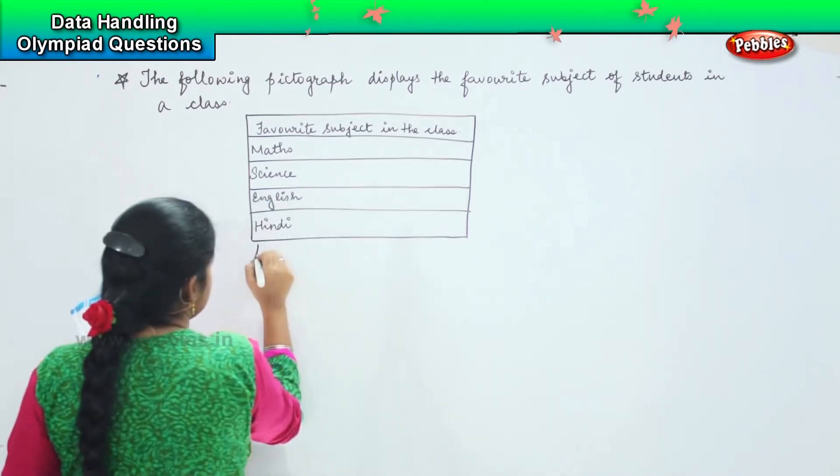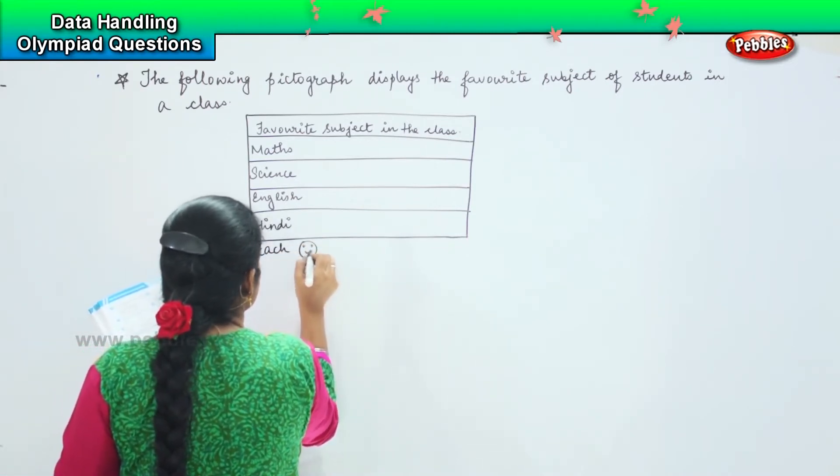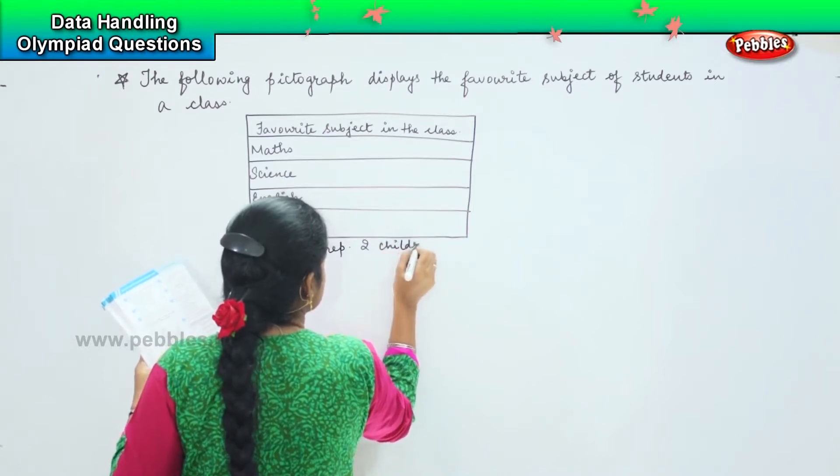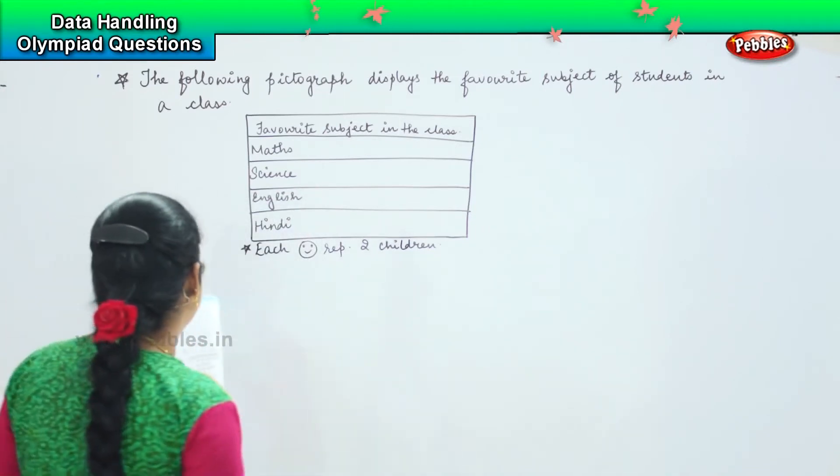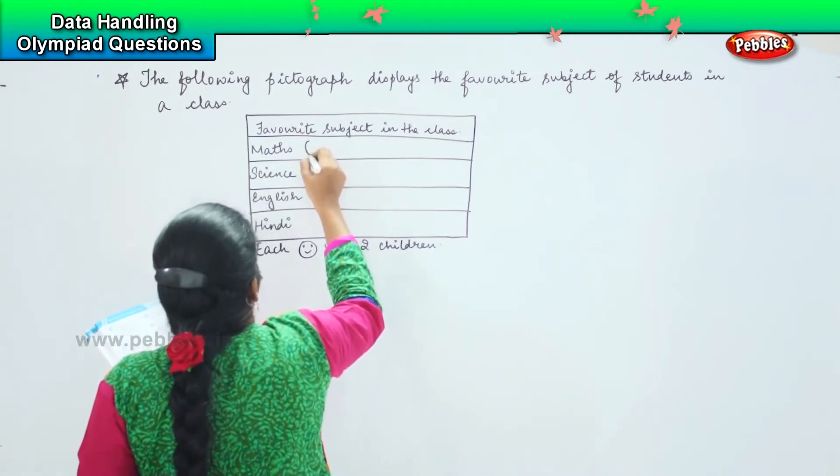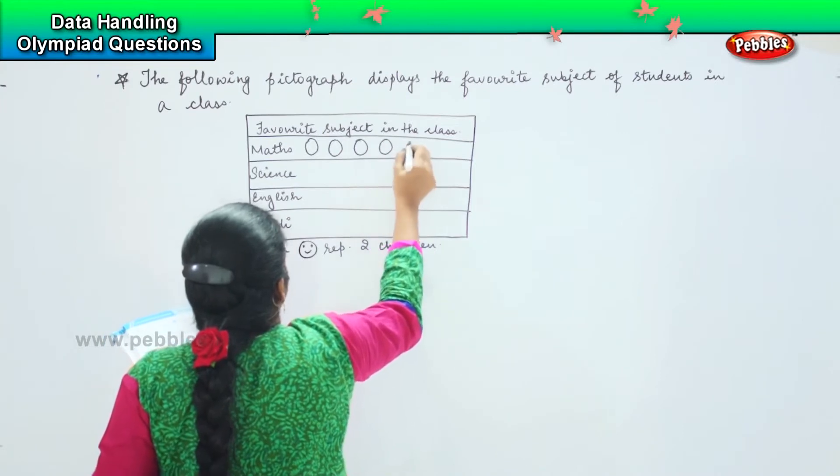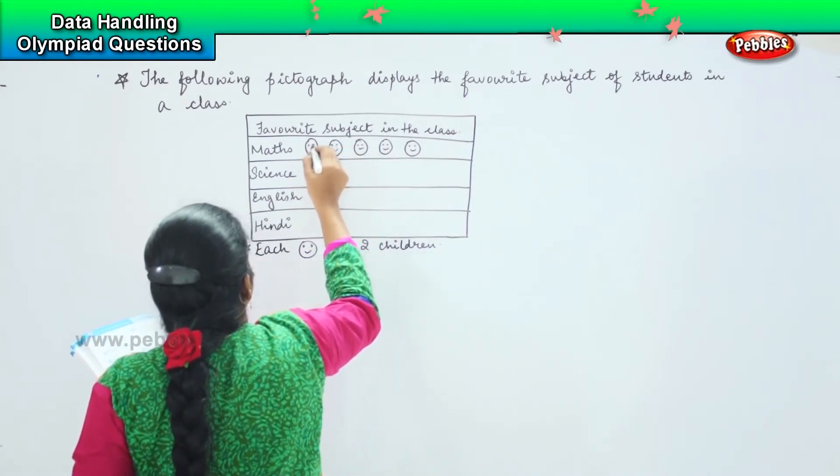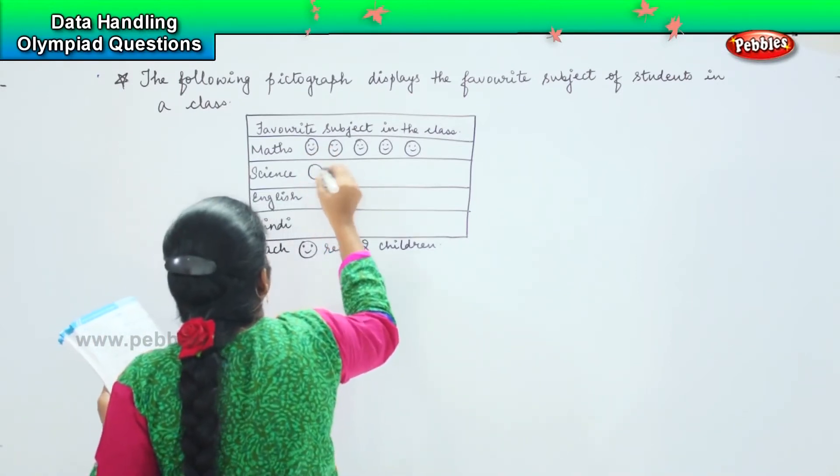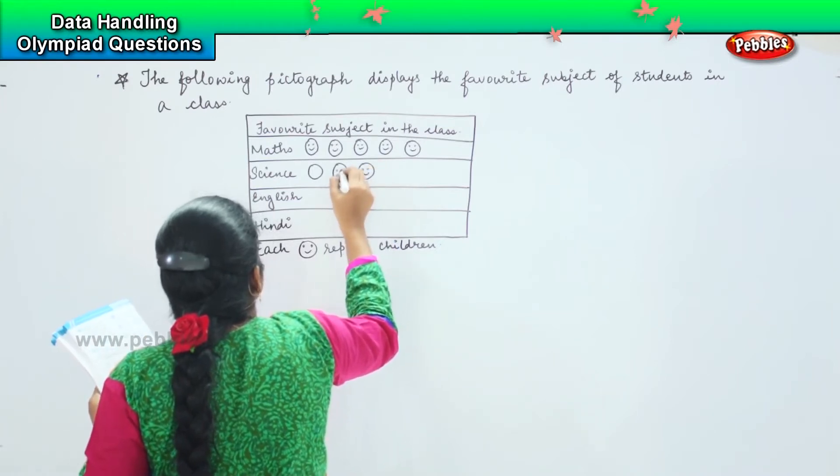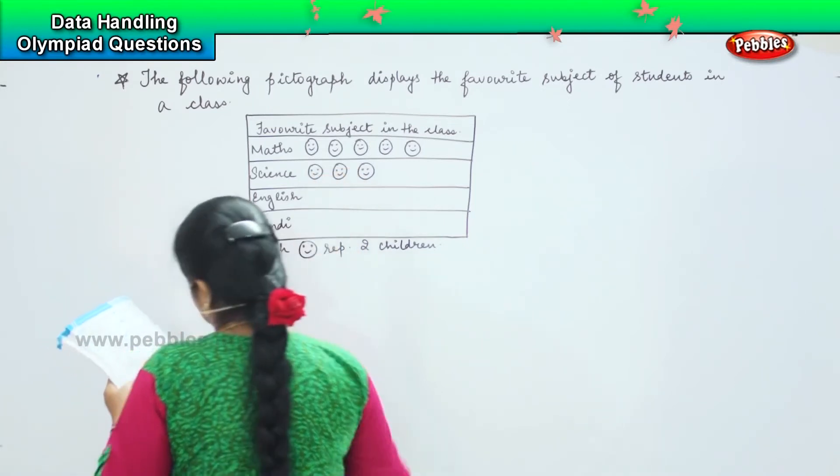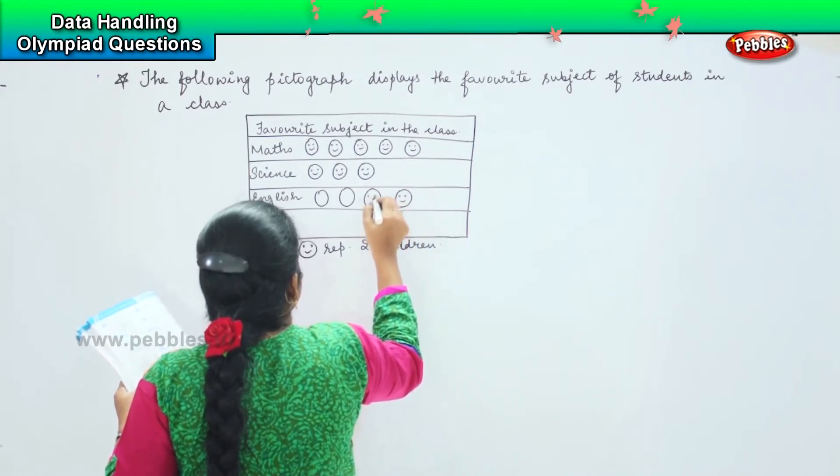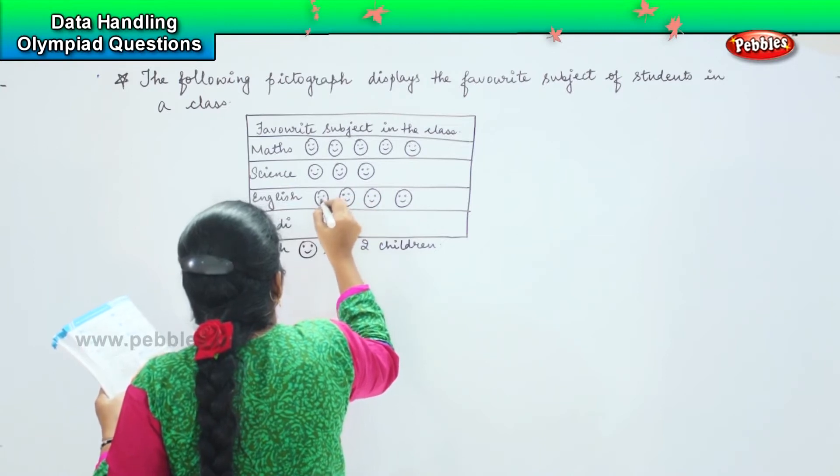And it says that each smiley represents two students. This is the instruction given. So the first one, second one, third one, and the fourth one.